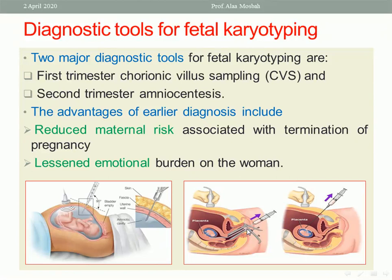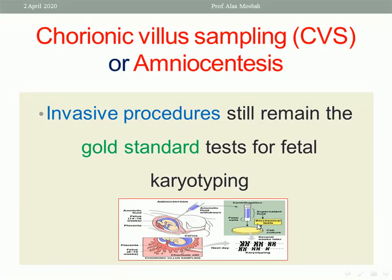The advantages of early diagnosis via chorionic villus sampling, performed in the first trimester, include: first, reducing maternal risk associated with termination of pregnancy — complications are fewer when termination occurs in the first trimester compared to the second trimester; second, lessening the emotional burden on the woman. Both transcervical and transabdominal CVS approaches are guided by ultrasound. Amniocentesis, done in the mid-trimester, is the other option. Invasive procedures remain the golden standard for fetal karyotyping.